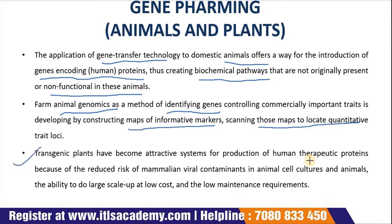Transgenic plants have become an attractive system for the production of human therapeutic proteins because of the reduced risk of mammalian viral contaminants in animal cell culture and animals, and the ability to do large-scale up at low cost and low maintenance. A feasibility study was reported for the production of human therapeutic proteins through transplastomic transformation technology, which has the additional advantage of increased biological containment by apparent elimination of the transmission of the transgene through pollen. It has been shown that the chloroplast can express a secretory protein — human somatotropin — in a soluble, biologically active, disulfide-bonded form.